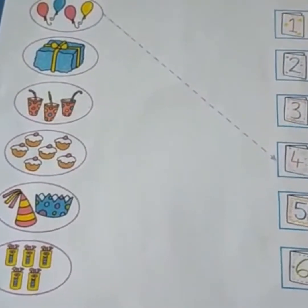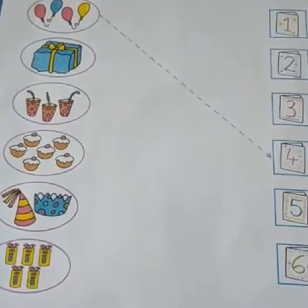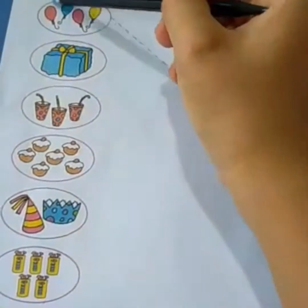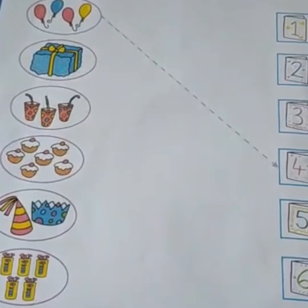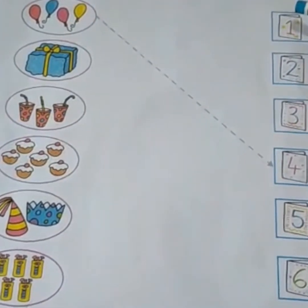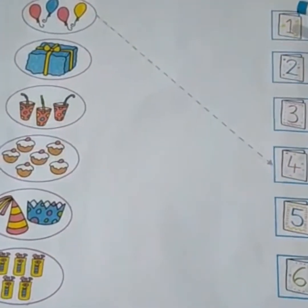Now, what you have to do, you have to count the object and draw a line to the correct number.